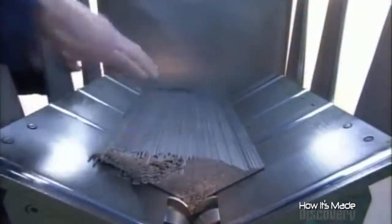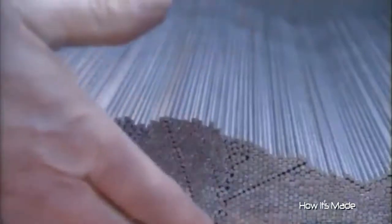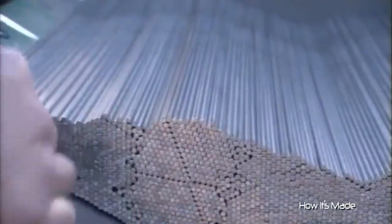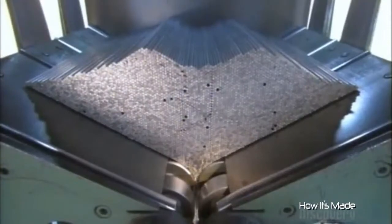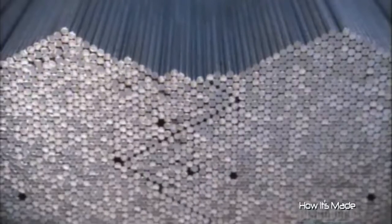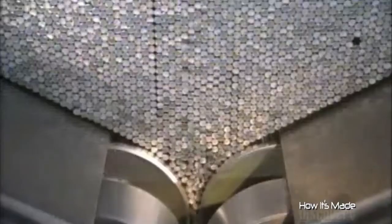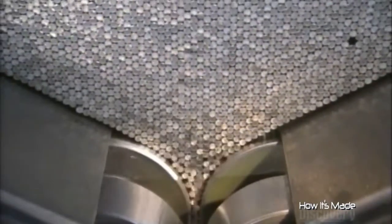To load the wires into the press, they first stack them in this feeder. The opening at the bottom is adjustable for different diameters because core wires range from spaghetti thin to pencil thick. These rollers pass them through the press one at a time.